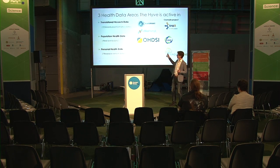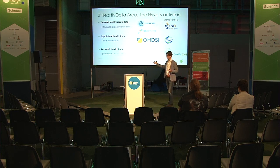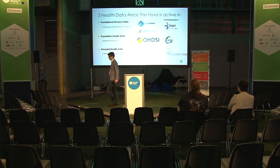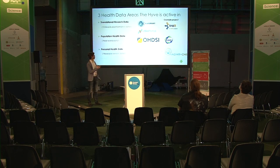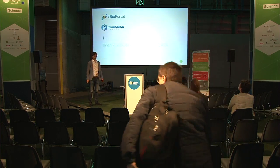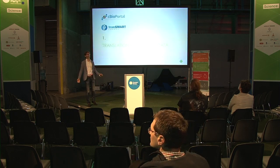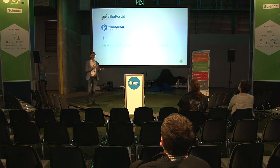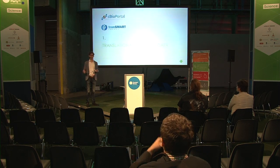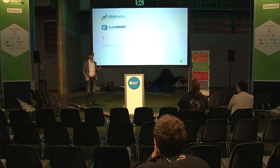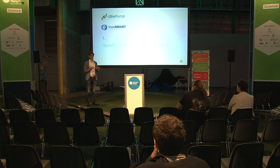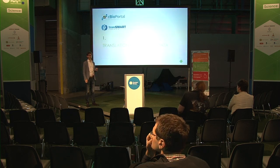There are three main areas in which we're active: translational research, population health data, and personal health data using wearable sensors. The first one, translational research data, is about combining patient data with biological data from the same patients — for example, clinical attributes like age and gender with bioinformatic data, which can be DNA, RNA, the genome, expression, and even proteins. There's a lot you can measure.